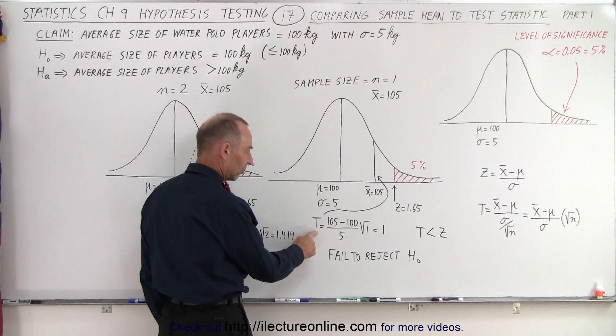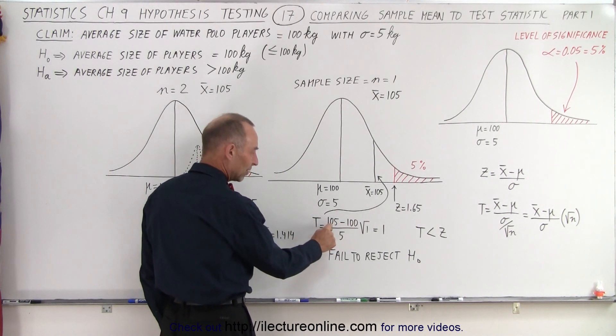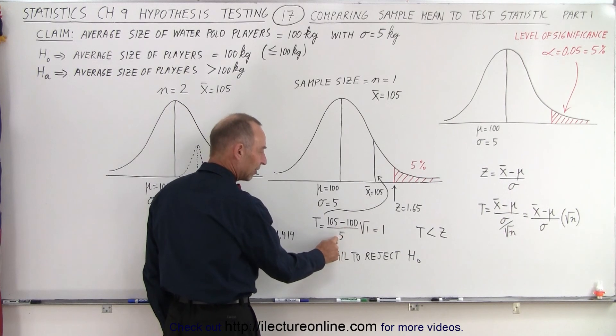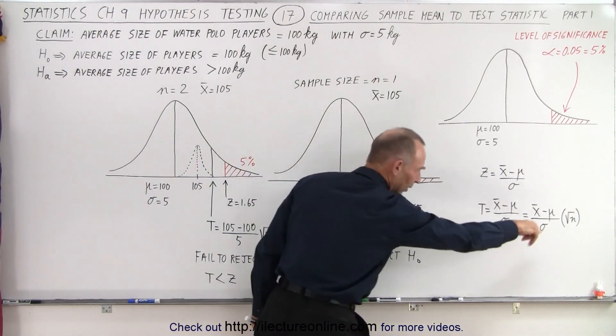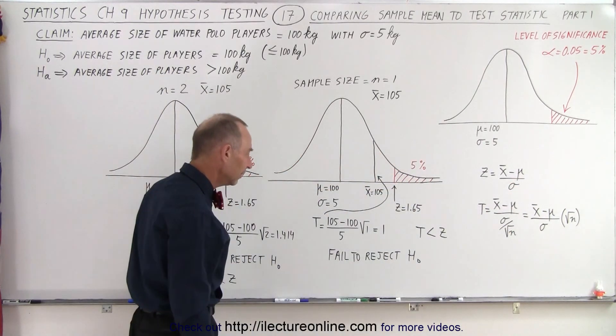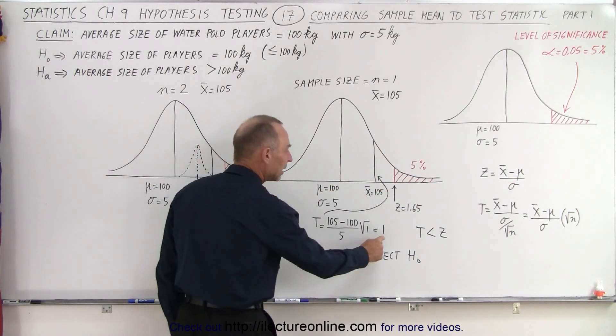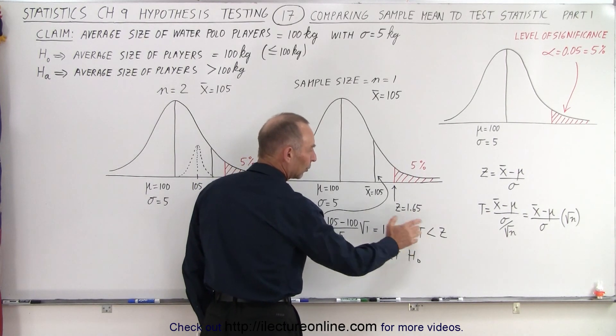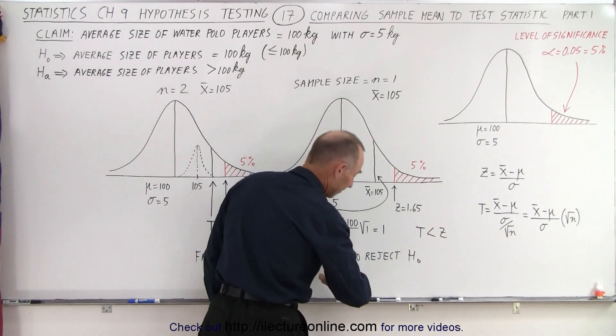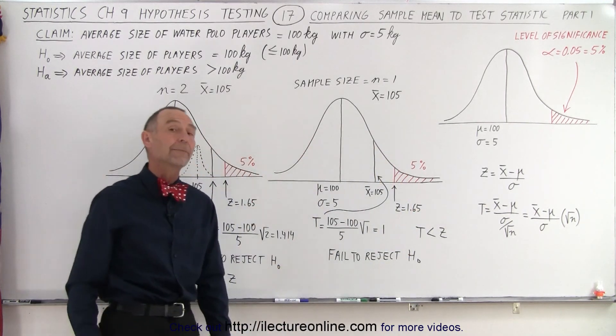We're going to calculate the test statistic. We take the difference between the sample mean and the population mean, divided by the standard deviation, and multiply it times the square root of n. That ends up being equal to 1. And since 1 is less than the z-score 1.65, we're going to therefore fail to reject the null hypothesis.